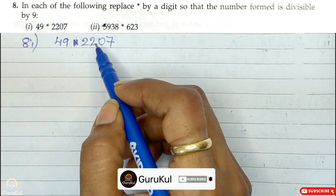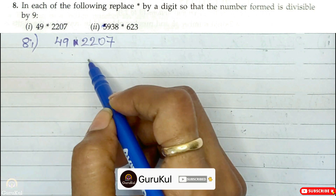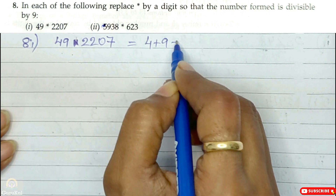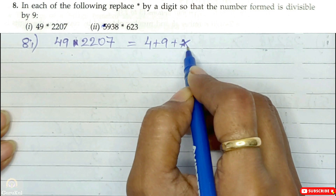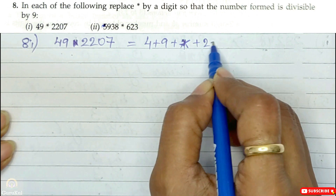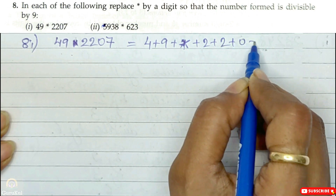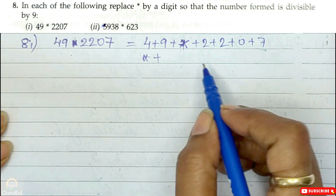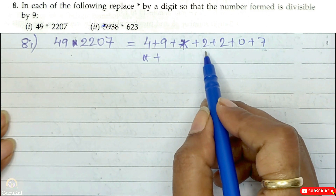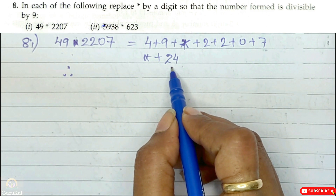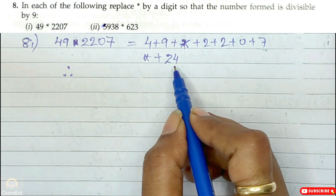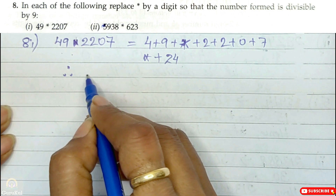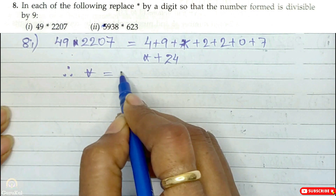The divisibility test of 9 requires us to find the sum of the given number's digits. So: 4 plus 9 plus star plus 2 plus 2 plus 0 plus 7. That gives us star plus 24. Now, what do we add to 24 so that the sum is divisible by 9? It will be 24 plus 3, so star's value is 3.